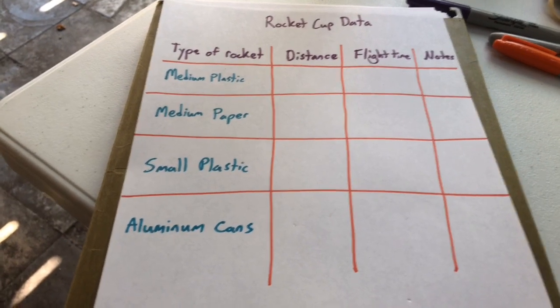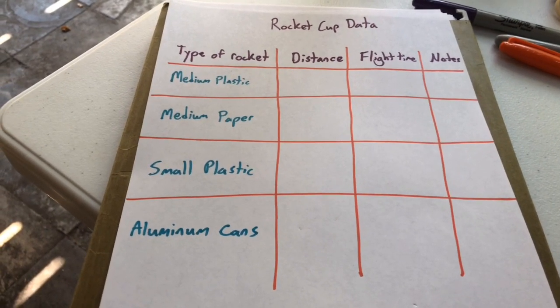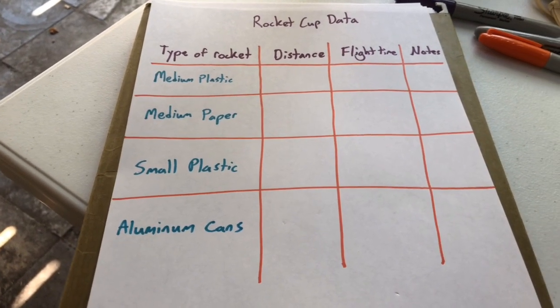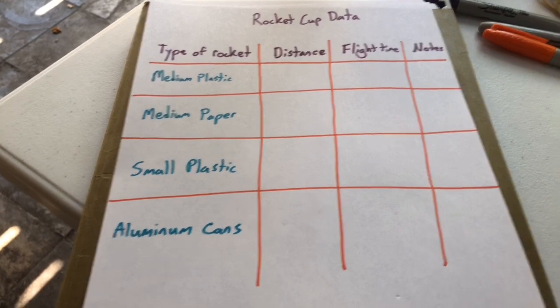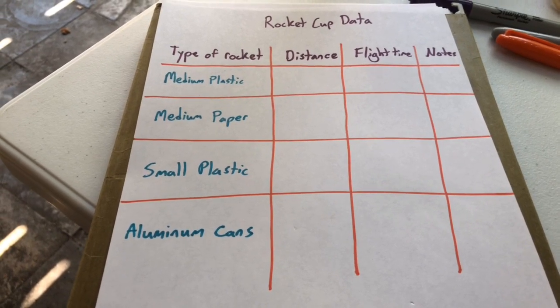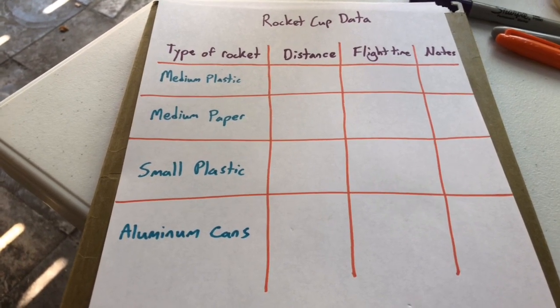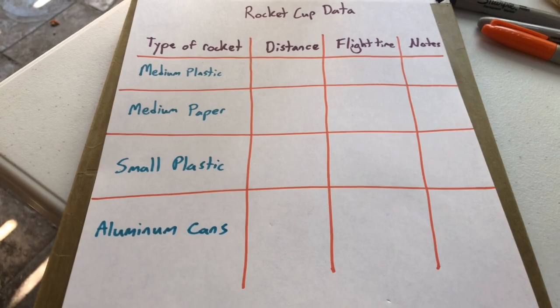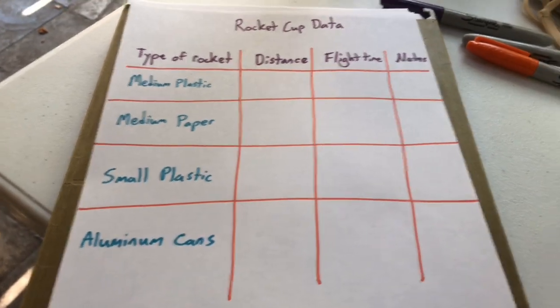A data table is used to record information in rows and columns. It's used to help sort, analyze, and compare data gathered from a science experiment or a research project.